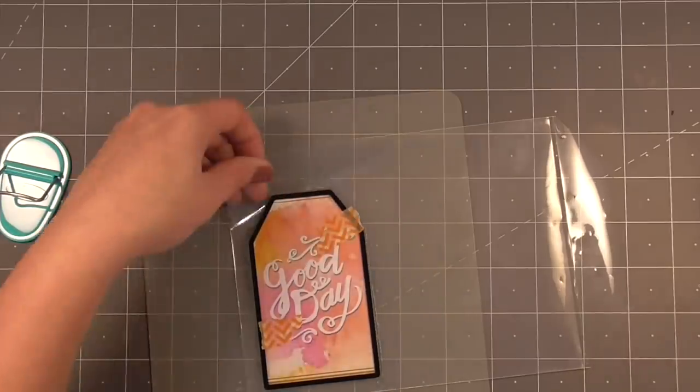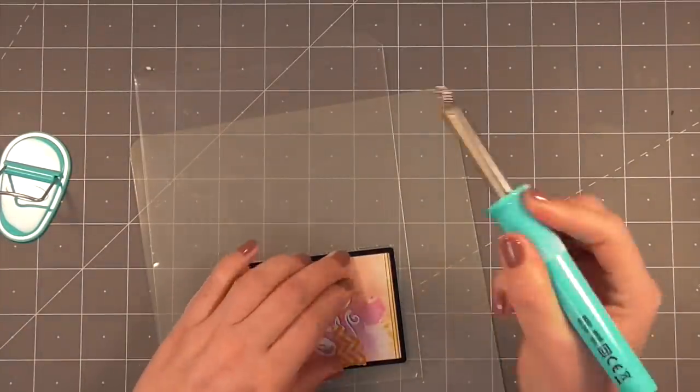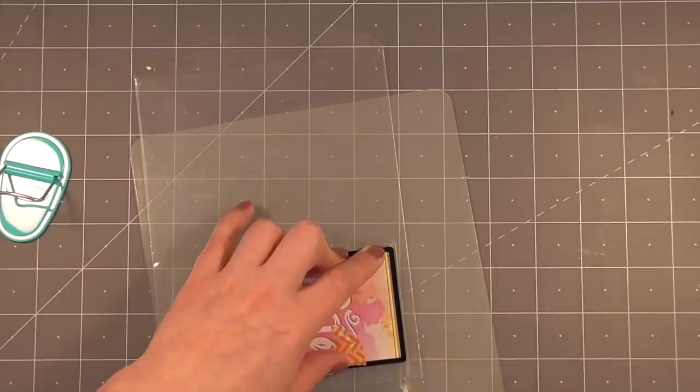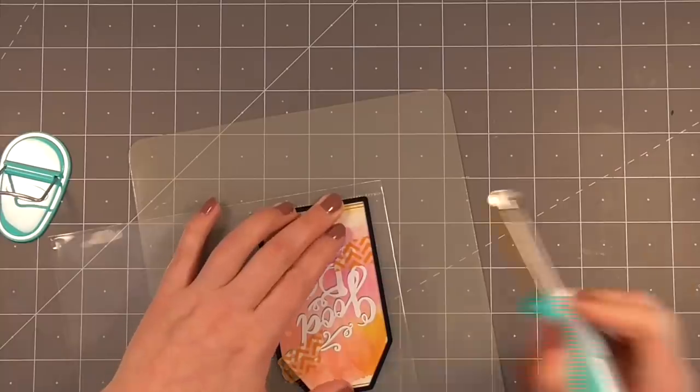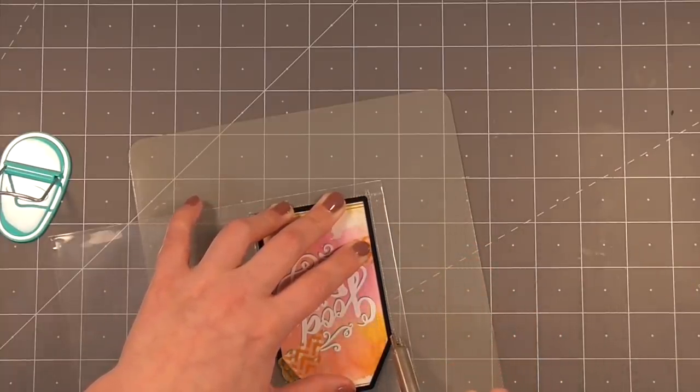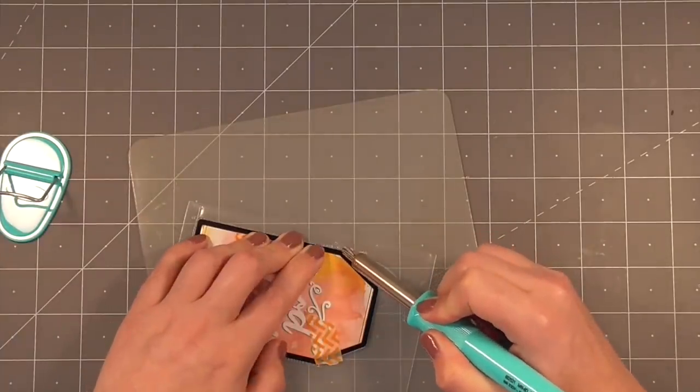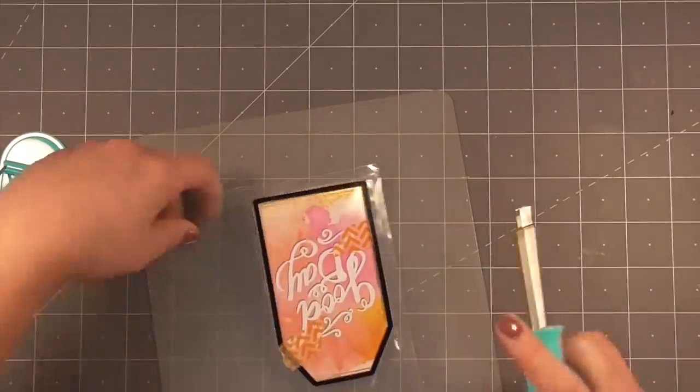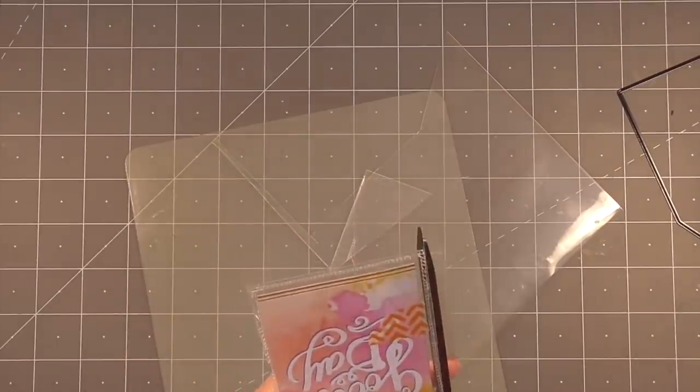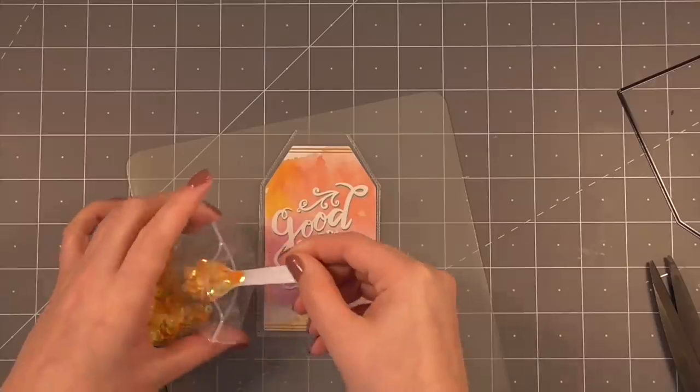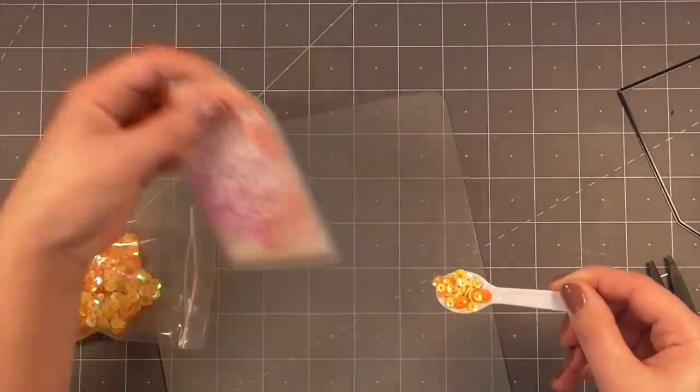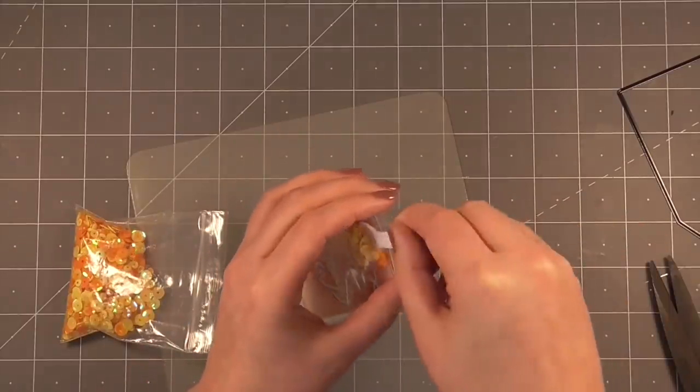Instead of using the ruler that comes with the fuse tool I decided to use the edge of the die so I could get this exact to the shape of the paper that we've die cut. You can do this with cookie cutters or anything that you have that is metal that will allow you to run the fuse tool along the edges. I'm working on a silicone mat. It will melt your craft mat if you try and use it, so be warned.